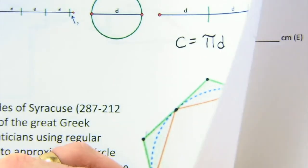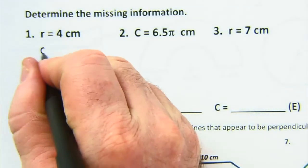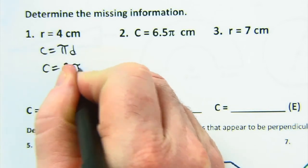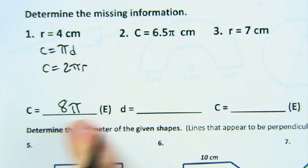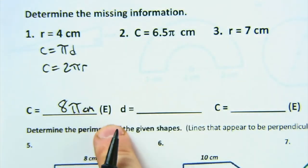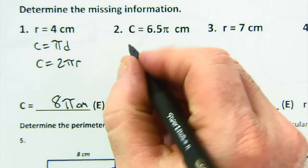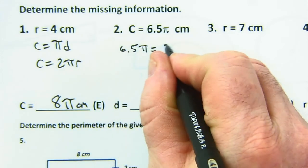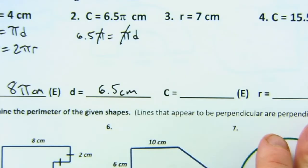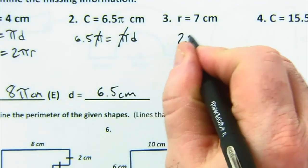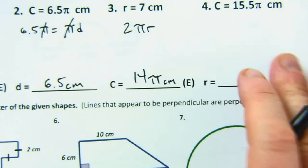Let's look at some circumference questions. You can use C = πd or C = 2πr. Here you're given the radius of 4, so 2 times 4 is 8π centimeters — the E means exact, so we leave pi in the answer. Here the circumference is given as 6.5π, so using C = πd, the diameter is 6.5 centimeters. And here the radius is 7, so it's 2πr giving 14π as the exact circumference.